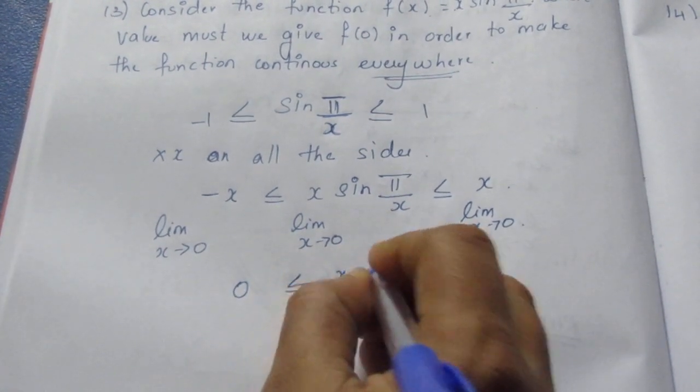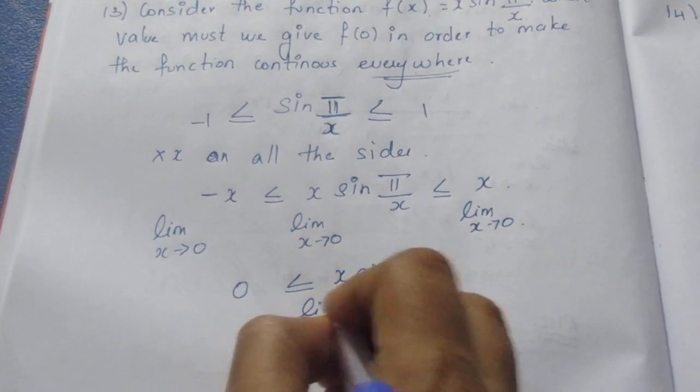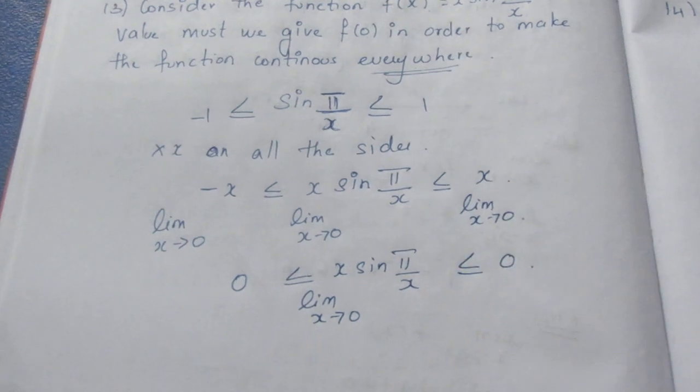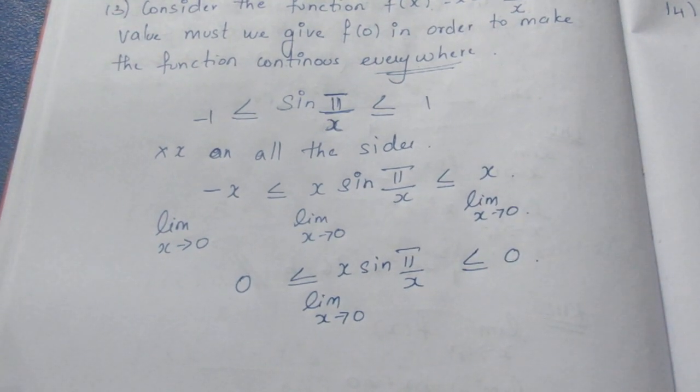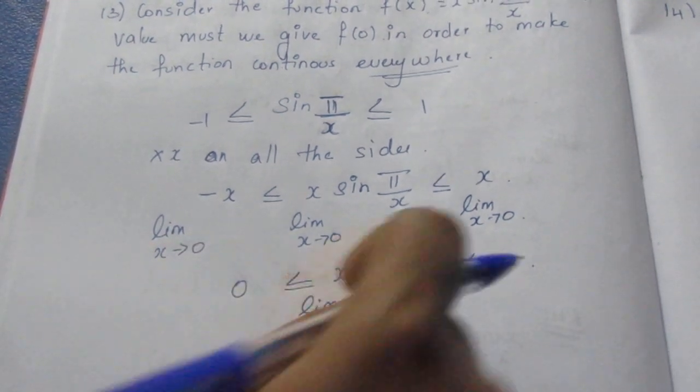When we substitute limit as x tends to 0, we get 0 on the left and 0 on the right. So we have 0 and 0.